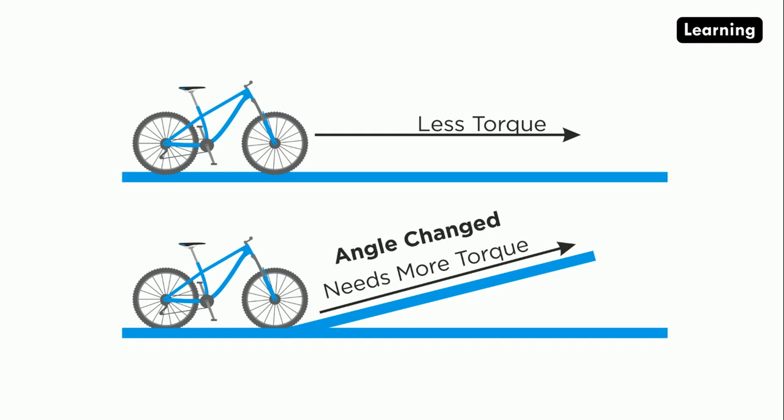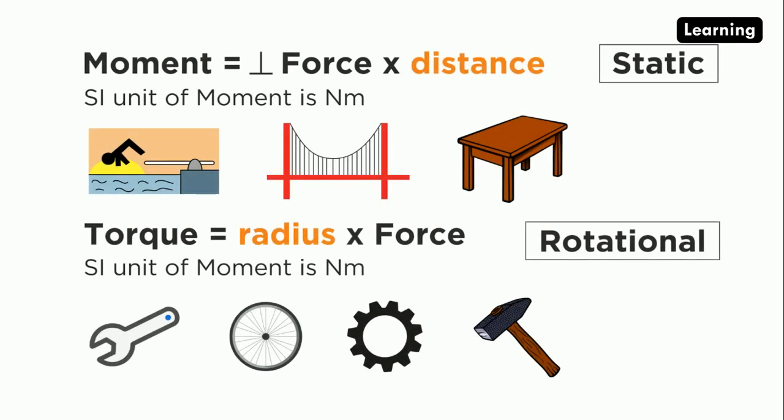To conclude, the bending moment is force times distance. Torque is also radius times force. Radius and distance are the same. The SI unit of moment and torque is Newton meter. We need to understand the examples and situations of moment and torque. The bending moment is calculated at static loading conditions and the torque is calculated at rotational or rotary motions. Thank you.